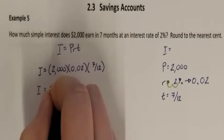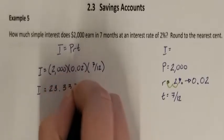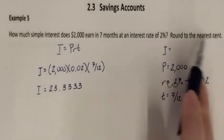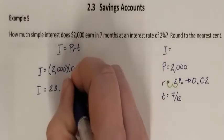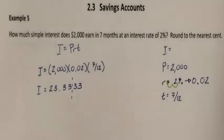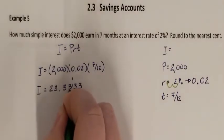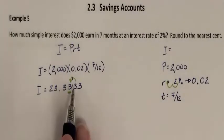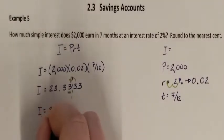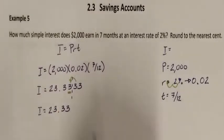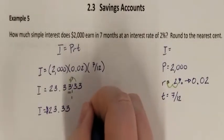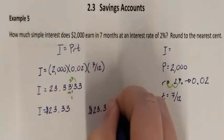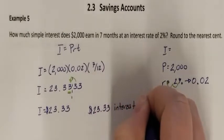Multiplying all of this together on my calculator, I get I to be 23.333333 — it repeats. It says to round to the nearest cent, which has two decimal places. The digit after the second decimal place is 3, which is smaller than 5, so we stay exactly where we are. My rounded interest is $23.33. So my final answer is $23.33 worth of interest earned in 7 months.